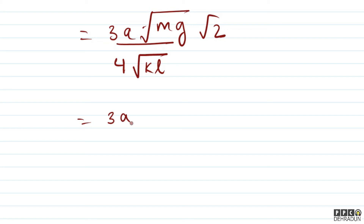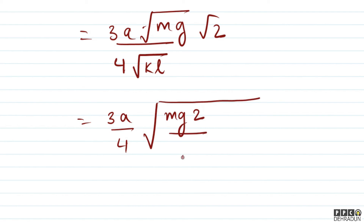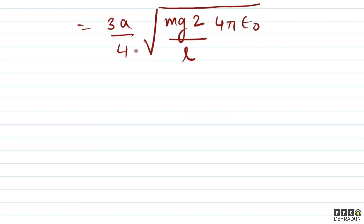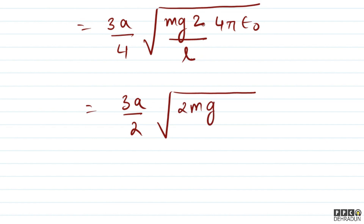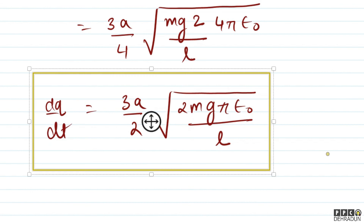चलिए बच्चों, इसे further simplify कर देते हैं। 3a/4 as it is रहने देते हैं और under the root में mg, 2, l, और k = 1/(4πε₀) put करते हैं। 4 root के बाहर आ जाएगा, तो 3a/2 आ जाएगा, और under the root में 2mgπε₀/l आ जाएगा। तो final answer है: dq/dt = (3a/2) × √(2mgπε₀/l)।